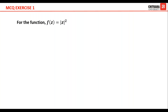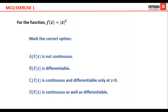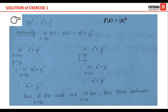The first exercise given to you: for the function f(z) equal to mod z squared, you have to mark the correct option — whether f(z) is not continuous, whether it is differentiable, or it is continuous and differentiable only at z equal to zero, or f(z) is continuous as well as differentiable. To check continuity, we are given that f(z) is mod z squared. I can write mod z as the square root of x squared plus y squared, which becomes x squared plus y squared.